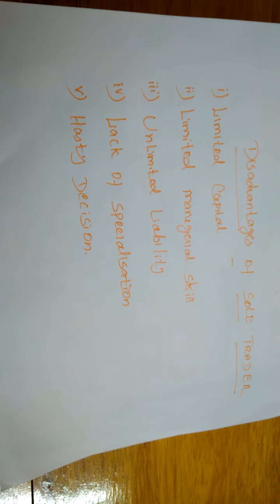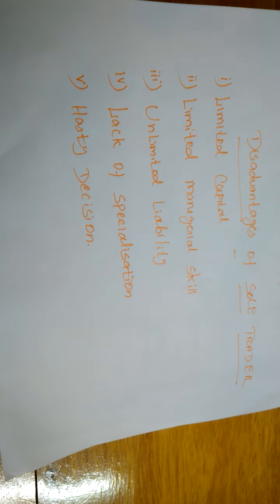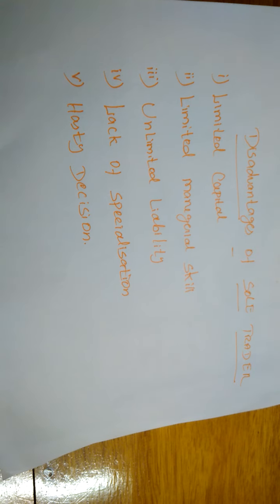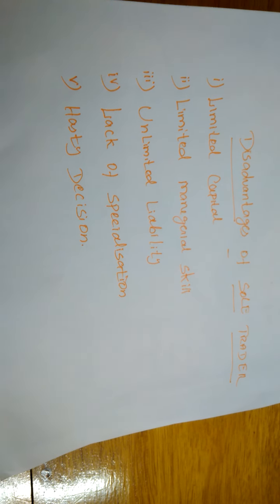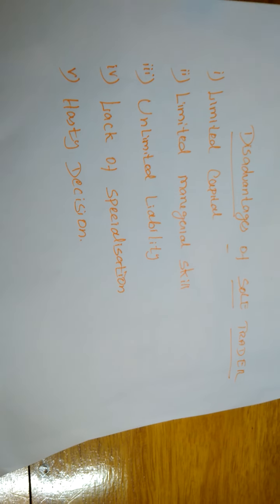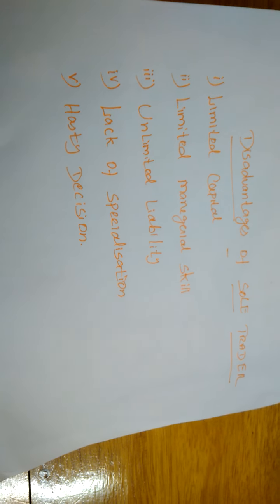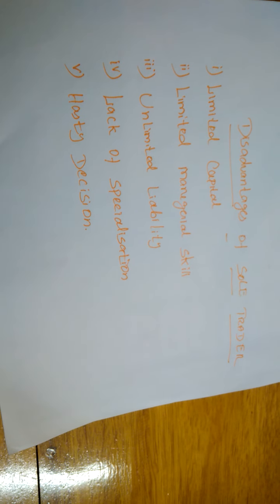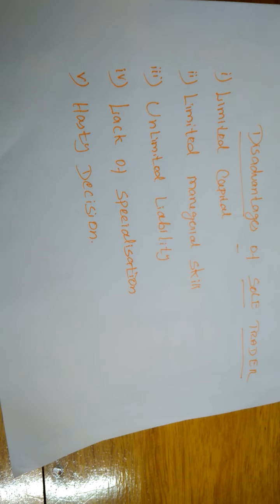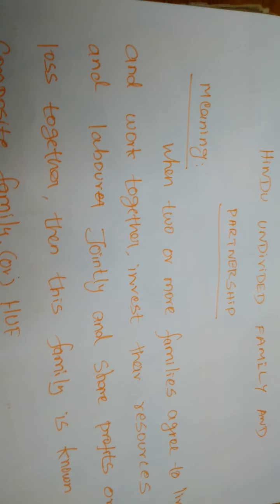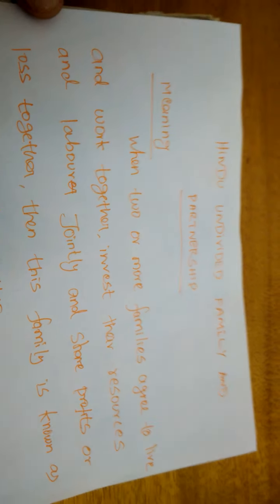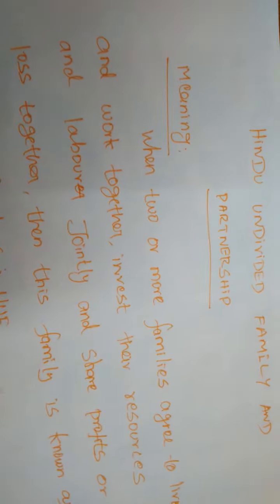The first chapter in the second unit — sole trading business organization — is now completed. It is a very easy lesson. If you have any doubts, please ask. Now we will go to the next lesson: the second lesson in the second unit is Hindu Undivided Family and partnership organization.